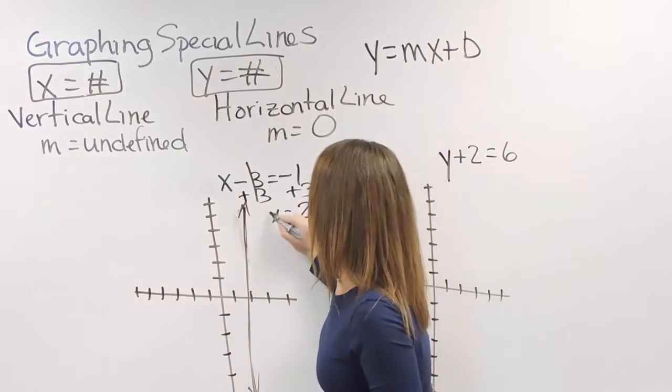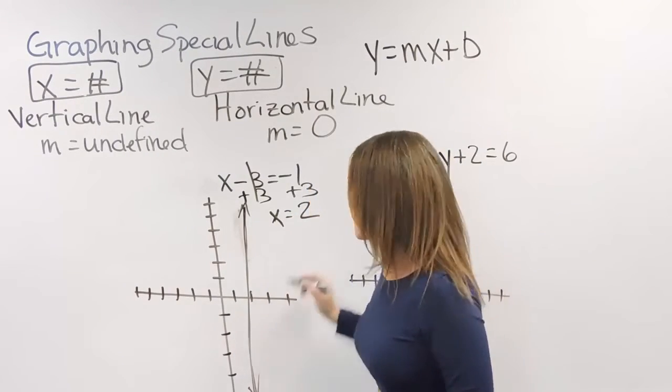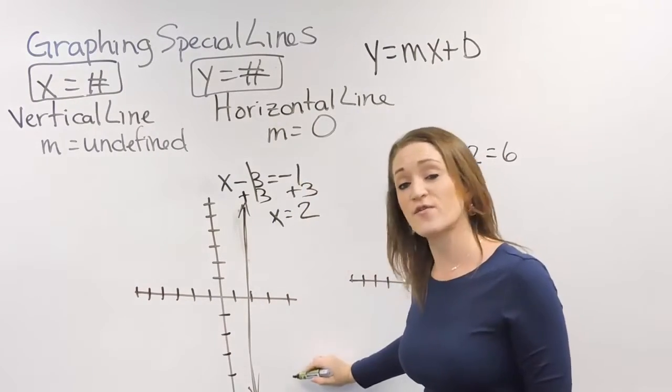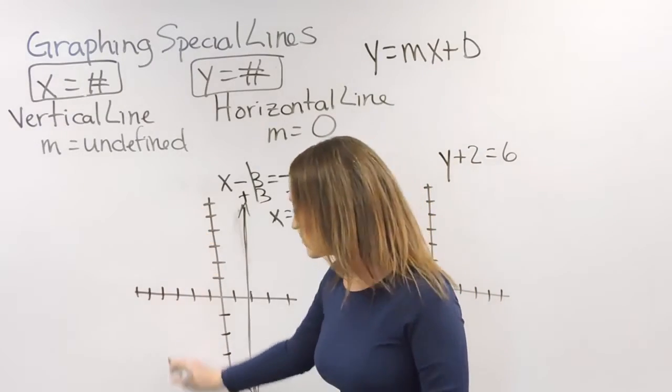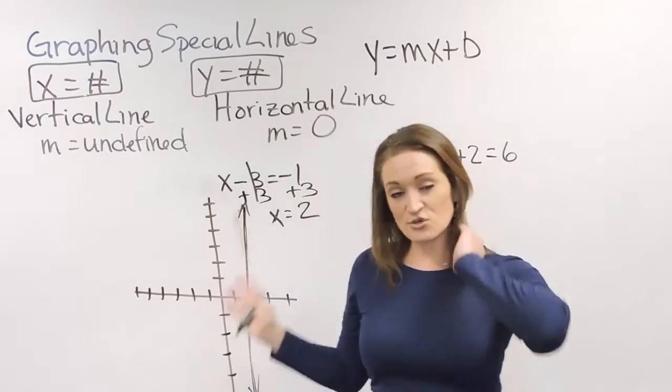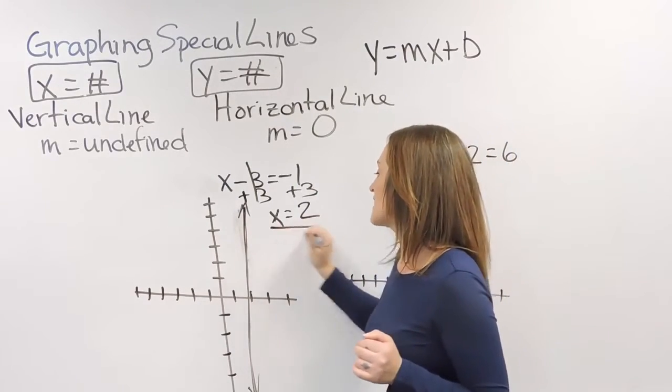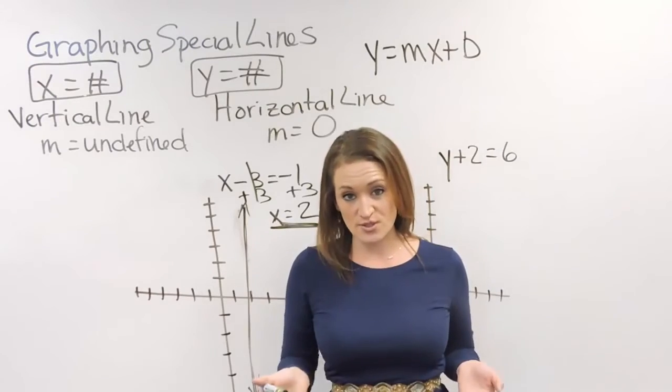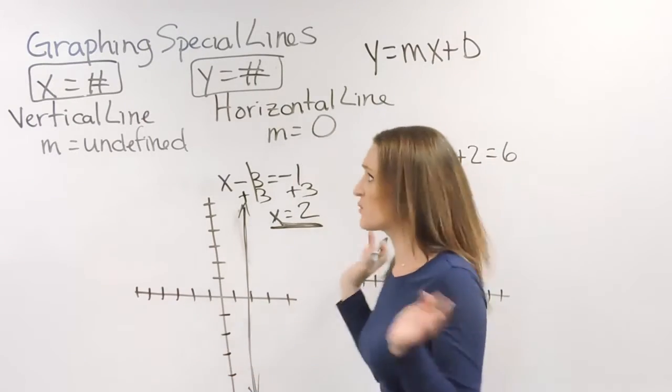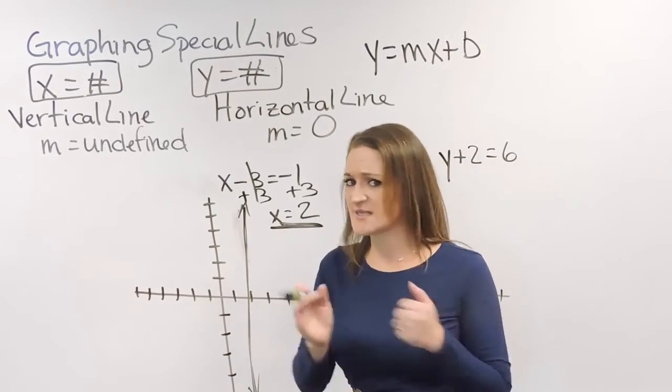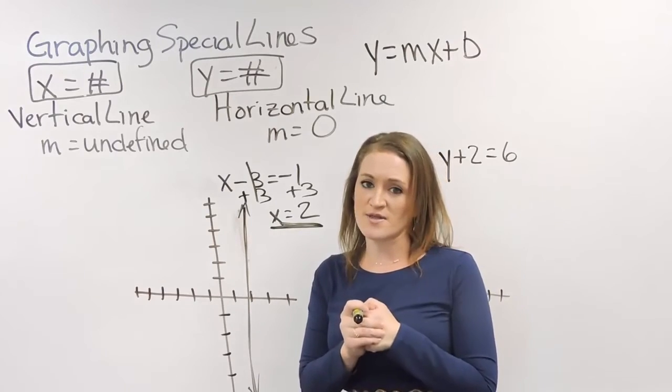Move over whatever that number says. Had it said a 4, I would have drawn a straight line at the 4. Had it said a negative 3, I would have drawn a straight vertical line over here. So just draw a straight vertical line at whatever that number that it is set equal to. Pretty simple, right? They really, there's no tricks to these, they really do not get any harder than that.